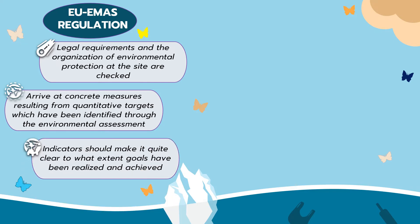Regarding environmental audits, indicators should make it quite clear to what extent goals have been realized and achieved. Finally, the regulation lays down rules for the publishing of environmental statements, whereby data should be presented in absolute form, as well as in relation to production units, to allow for comparison with previous years.